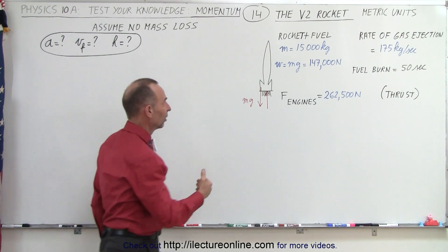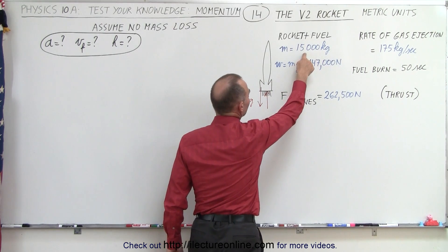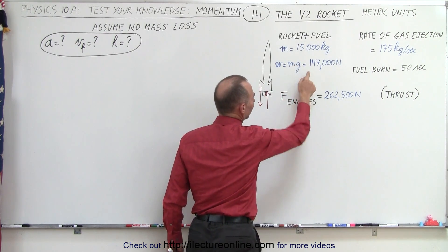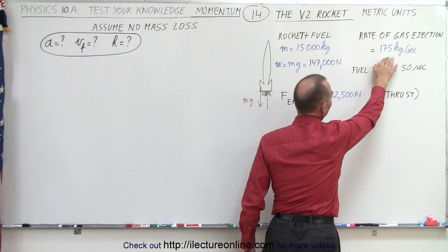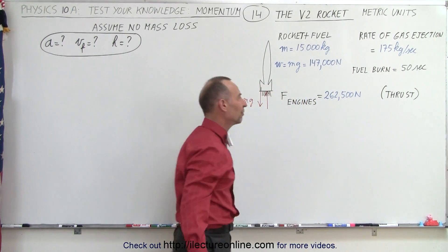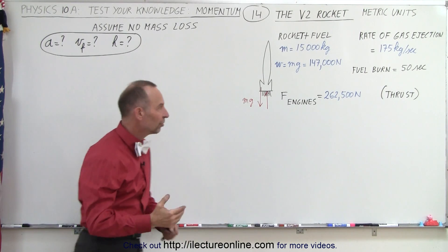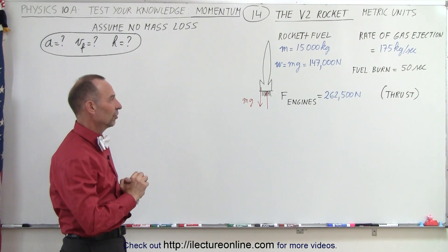So we have a mass for the rocket and fuel together of 15,000 kilograms, which is a weight of 147,000 newtons. We're burning gas at a rate of 175 kilograms per second, and the engines provide the thrust of 262,500 newtons.